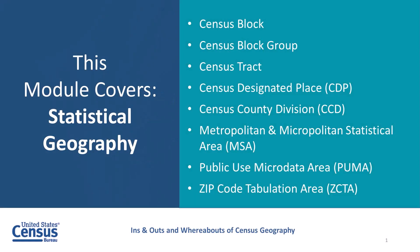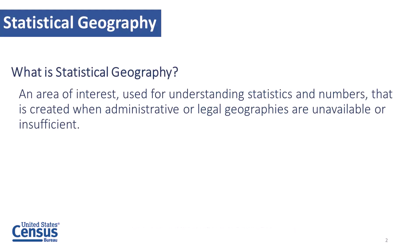This module covers statistical geographies. It's part of a larger presentation called the Ins and Outs and Whereabouts of Census Geography. Today we'll look at census block, block group, tract, designated place, census-designated places, census county divisions, metropolitan and micropolitan statistical areas — called MSAs — public use microdata areas, called PUMAs, and zip code tabulation areas, called ZCTAs. Statistical geography is an area of interest used for understanding statistics and numbers, created when administrative or legal geographies are unavailable or insufficient.